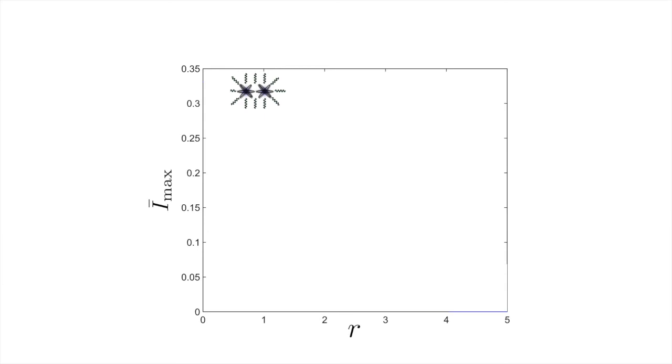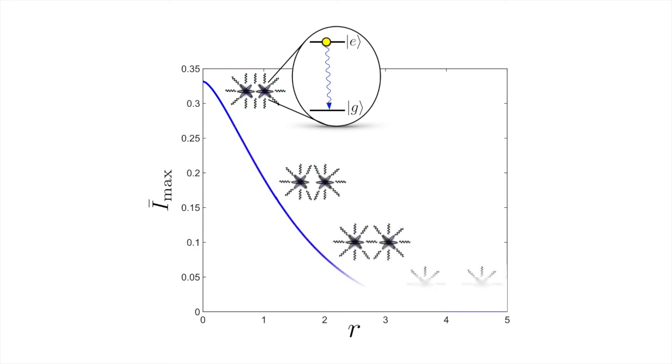As a first test, we apply our approach to the example of two atoms interacting with electromagnetic radiation field. Here, we find that our correlation measure captures correctly the expected behavior, namely that with increasing distance between the particles, their dynamics becomes more and more uncorrelated.